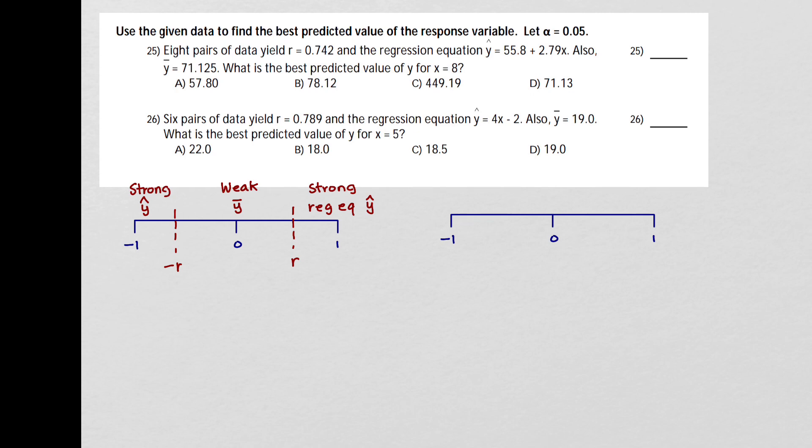So that means that we are going to have a critical r value of 0.707. So I'm going to mark that on my number line, both positive and negative. And then I look for where the correlation coefficient is falling. And in this case, my correlation coefficient is 0.742.